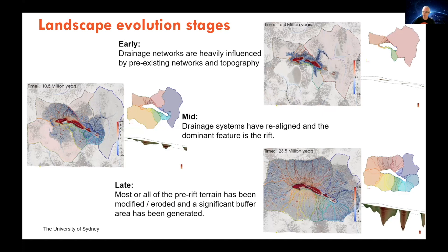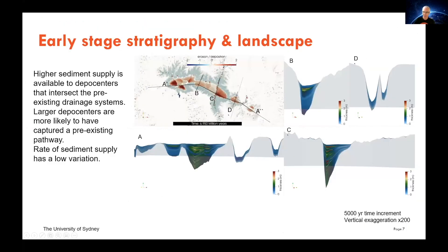What seems fairly apparent is that there are three stages in the landscape evolution. There's an early stage with a limited drainage network and connectivity, where depot centres generally have a high accommodation to sediment supply ratio. In the mid stage, the erosion front moves away from the edge of the depot centres, with higher sediment supply and good connectivity between the landscape and those depot centres. In the late stage, sediment needs to traverse a larger distance from the primary erosion front, and there's a large buffer area where sediment can be stored and then migrated again to the depot centres.